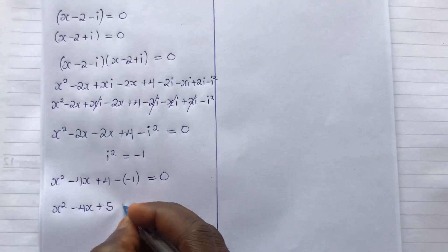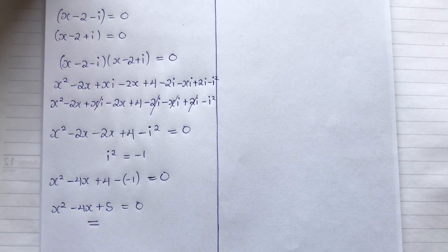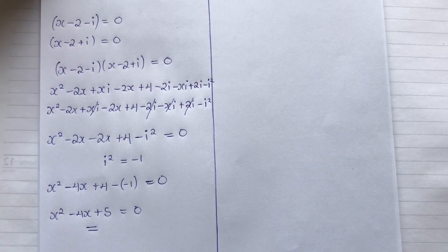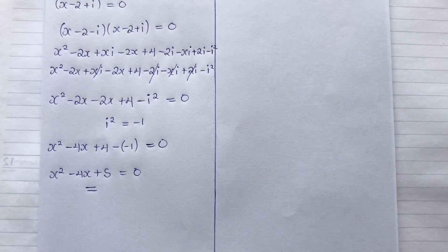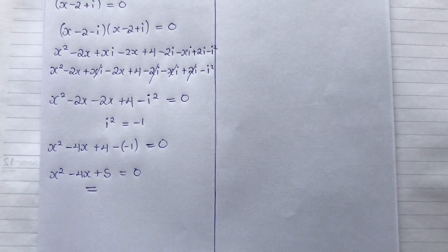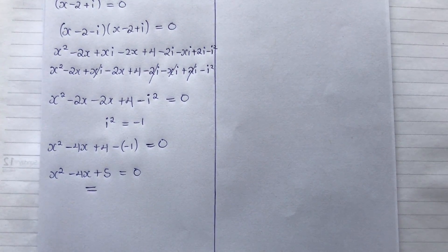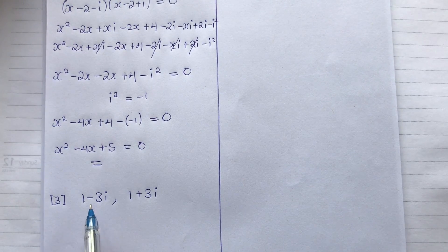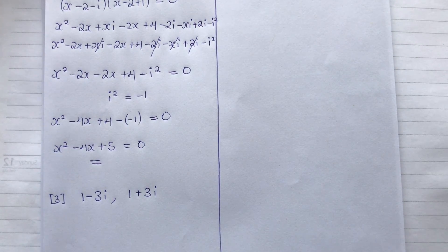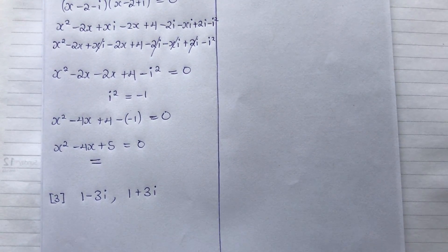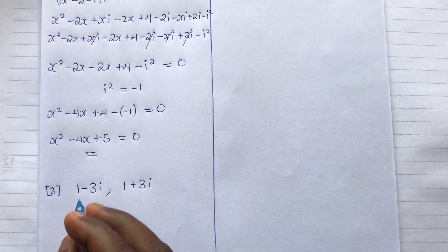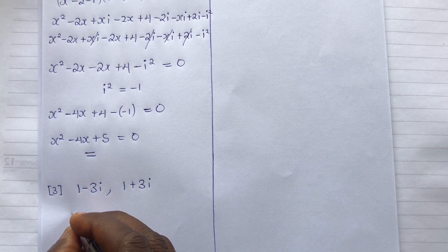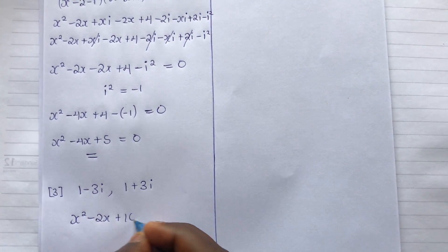So this is the quadratic equation generated from the given roots two plus i and two minus i, giving us x squared minus four x plus five equals zero. Now I'll give you one example to solve yourself using the same procedure — generate the quadratic equation from the given roots. If you are able to do that, you are good to go. The answer you should get is x squared minus two x plus ten equals zero.